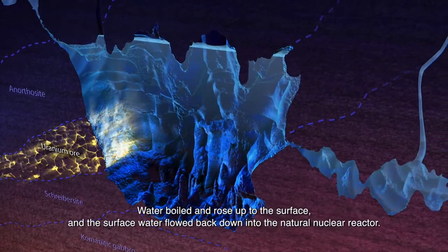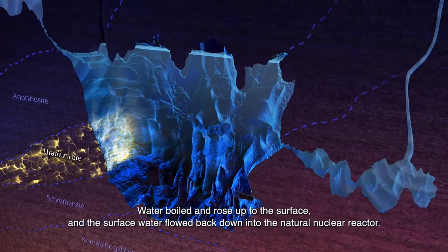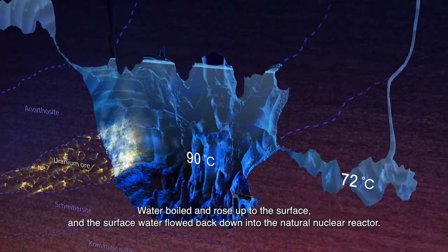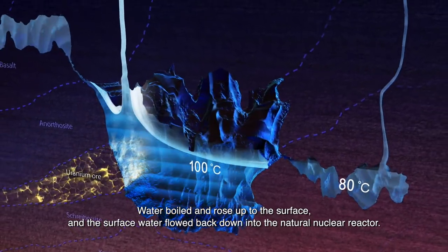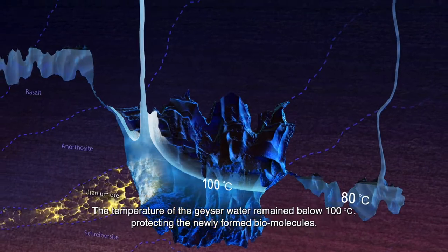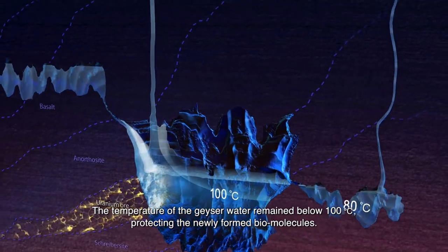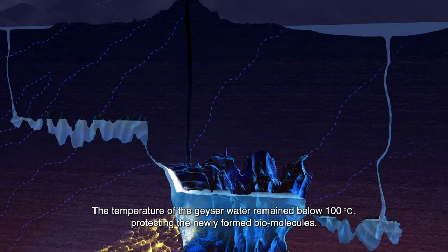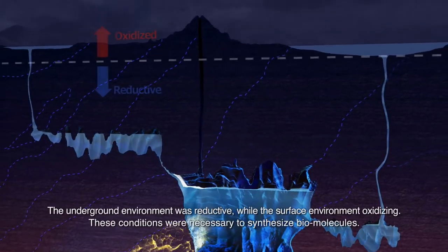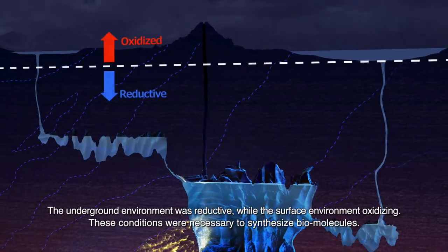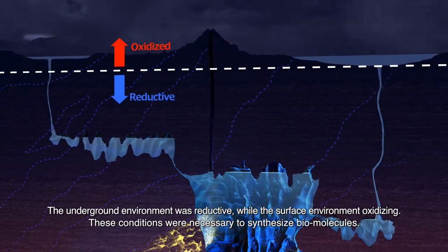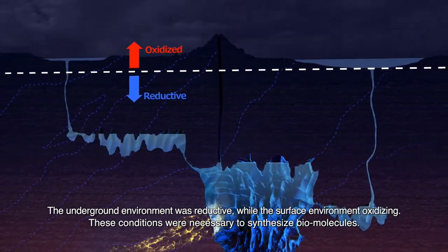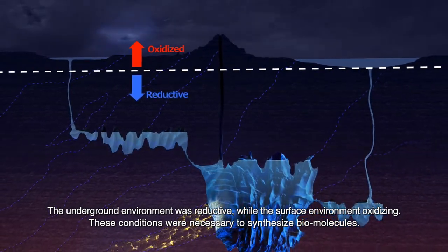Water boiled and rose up to the surface, and the surface water flowed back down into the natural nuclear reactor. The temperature of the geyser water remained below 100 degrees, protecting the newly formed biomolecules. The underground environment was reductive, while the surface environment was oxidizing. These conditions were necessary to synthesize biomolecules.